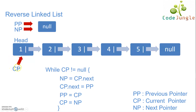We will iterate through the list and in each iteration, the condition will be that the current pointer should not be equal to null. If true, we will carry out four steps: next pointer points to current pointer's next node; current pointer's next points to previous pointer; previous pointer will be current pointer; and current pointer will be next pointer.